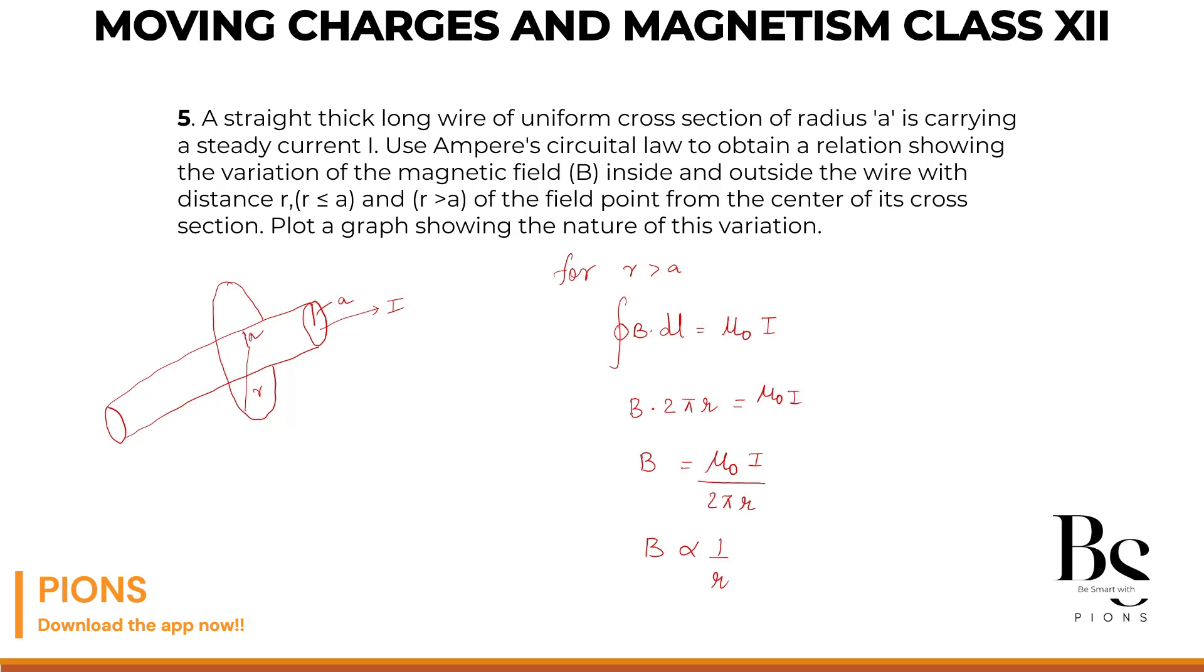You can see that from the above expression. If you remove this proportional sign, you will get mu0 I by 2π. That's a constant for a given wire if the current is fixed. I am not sending any variable current here. So this is the case for r greater than A. B is inversely proportional to r. Now what about inside the wire?